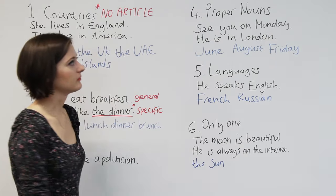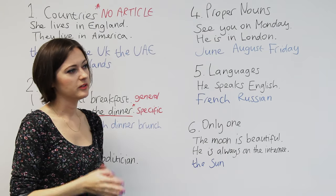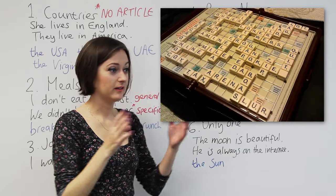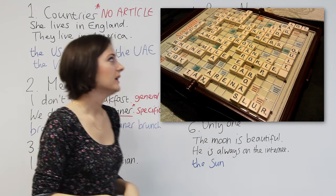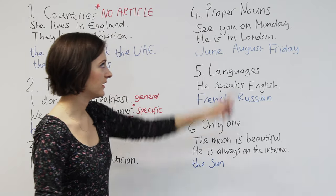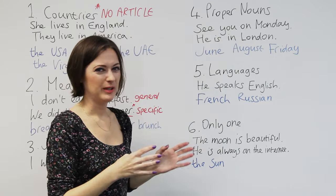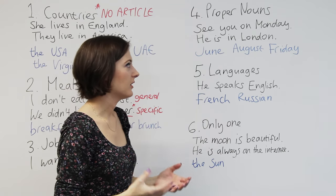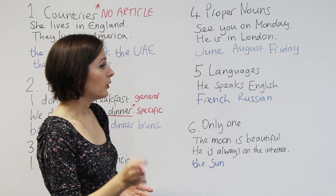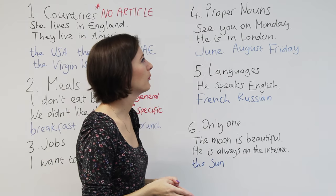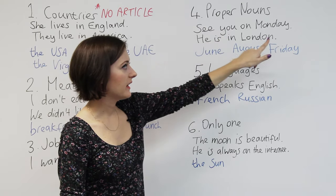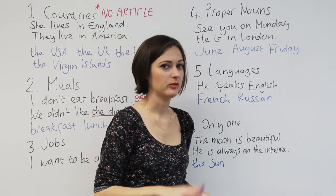Rule number four. Do you know the English language board game called Scrabble? In this game, you get points for spelling words, and a long word is usually better. But sometimes you'll have a long word that everybody knows but you can't get any points for it in Scrabble because it's a proper noun — a noun that takes a capital letter. It could be a word like June, August, Friday, or a place name like London. When we're using proper nouns, we don't use 'the' — the definite article — but we can use prepositions. So: 'see you on Monday' or 'he is in London.' Prepositions are okay with proper nouns, but not the definite article.